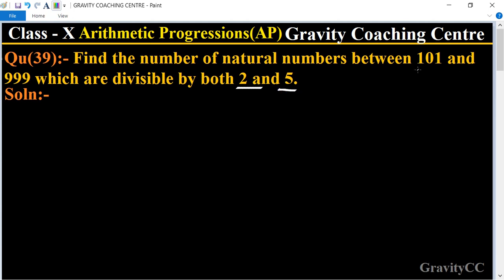In this question, first we write all the numbers between 101 and 999 which are divisible by 2 and 5. So the first number is 110, and the second one is 120, and the third one is 130, dot dot dot, to the last number is 990.